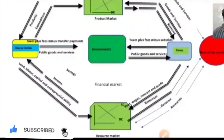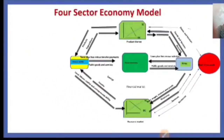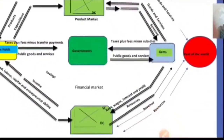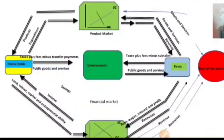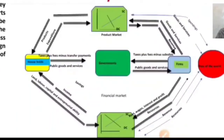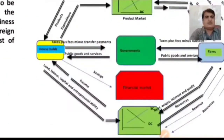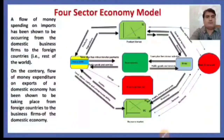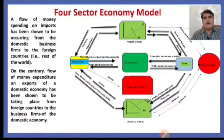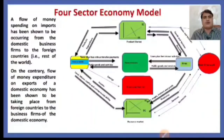There is also export and import of resources, and export and import in terms of goods and services. Goods and services are bought and sold from the rest of the world through the financial market, where households save and firms borrow. A flow of money spending on imports occurs from domestic business firms to foreign countries, while the flow of money on exports flows from foreign countries to the domestic business firms.